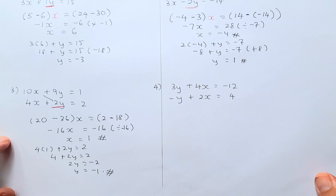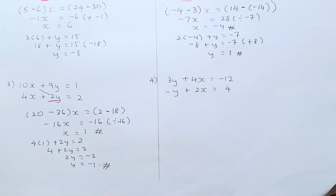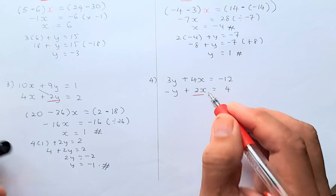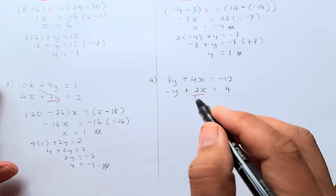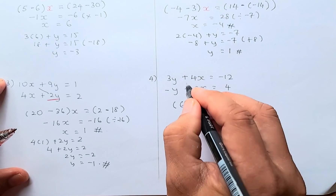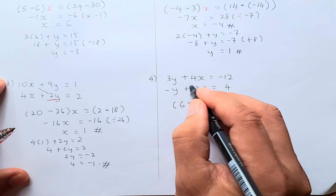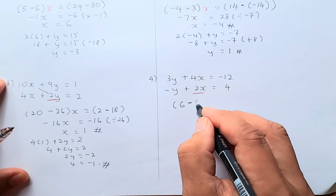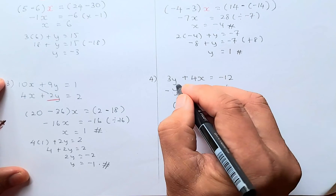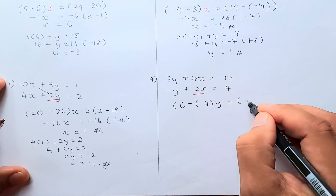Now we are doing the last one. The last one is slightly different — y starts first instead of x. It's the same procedure. Your 2x is your key point. So 2 times 3 is going to be 6, then minus 1 times 4 is going to be minus 4. And then because y starts first, you're going to put a y there. So 2 times minus 12 is minus 24.